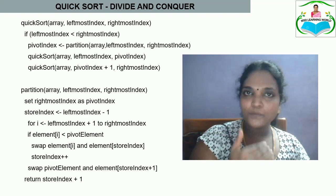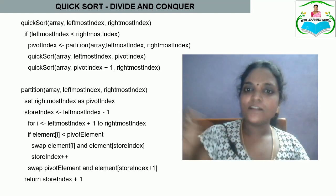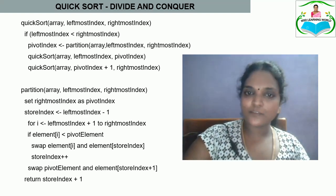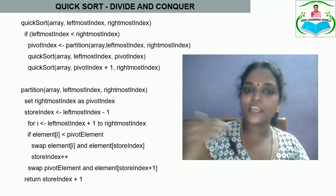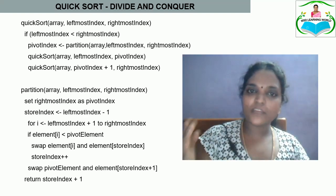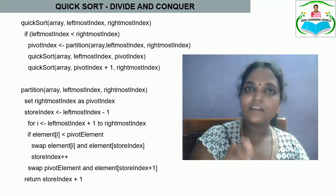In the partition function, the rightmost index is taken as the pivot index. The store index is initialized to leftmost index minus 1. A for loop runs from i equal to leftmost index to rightmost index. If the element at index i is less than the pivot element, a swap is performed and the store index is incremented. If the element is greater than the pivot, only the pointer moves. This continues until the pivot is placed in its exact position.